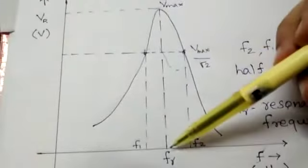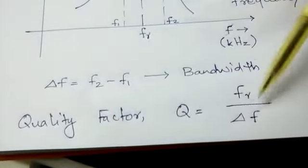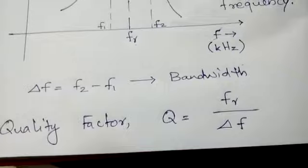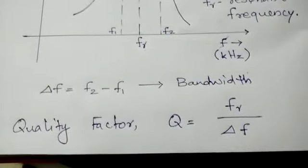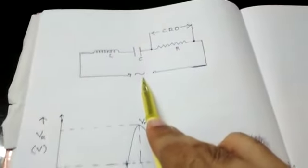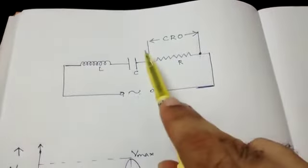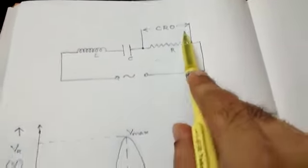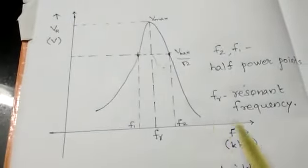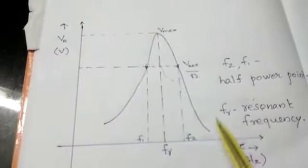The x-coordinate of the point where the graph maximum occurs is called the resonant frequency FR. From the theory of LCR circuits, the quality factor Q equals FR divided by delta F. The purpose of this experiment is to set up this circuit, vary the input frequency on the signal generator, measure the output voltage across the resistor using a CRO, and plot a graph between input frequency and output voltage — called the frequency response curve.